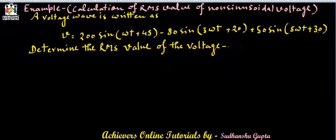In this problem, we have to calculate the RMS value of a non-sinusoidal voltage. The value of voltage is given as V is equal to 200 sin omega t plus 45 minus 80 sin 3 omega t plus 20 plus 50 sin 5 omega t plus 30.